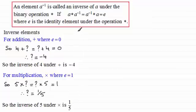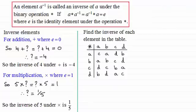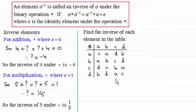Next I want to look at working out inverses when you have a table. I want you to try and find the inverse of each element in this table. Remember you've got to find out what the identity element is first before you can work out the inverse of each element. So take a moment to pause the video and when you come back you can check your methods against mine.